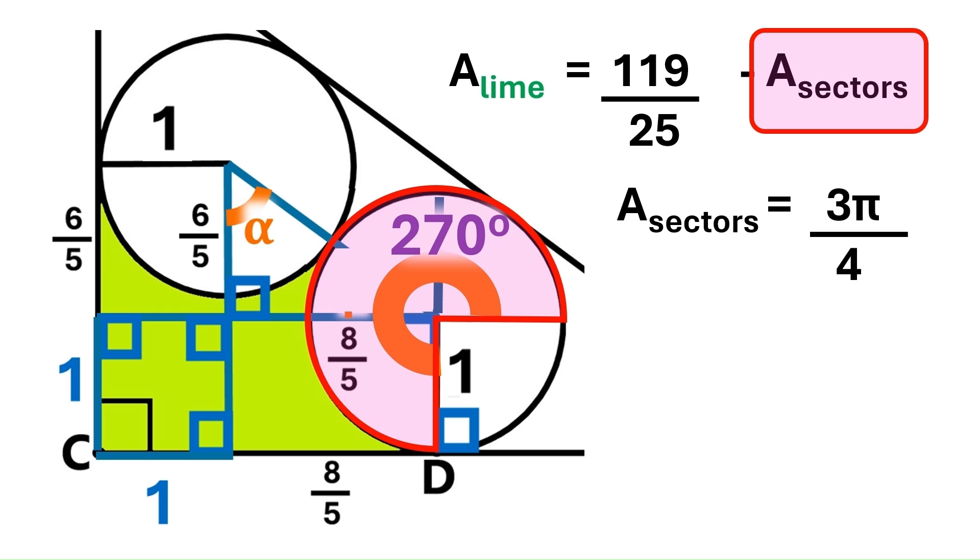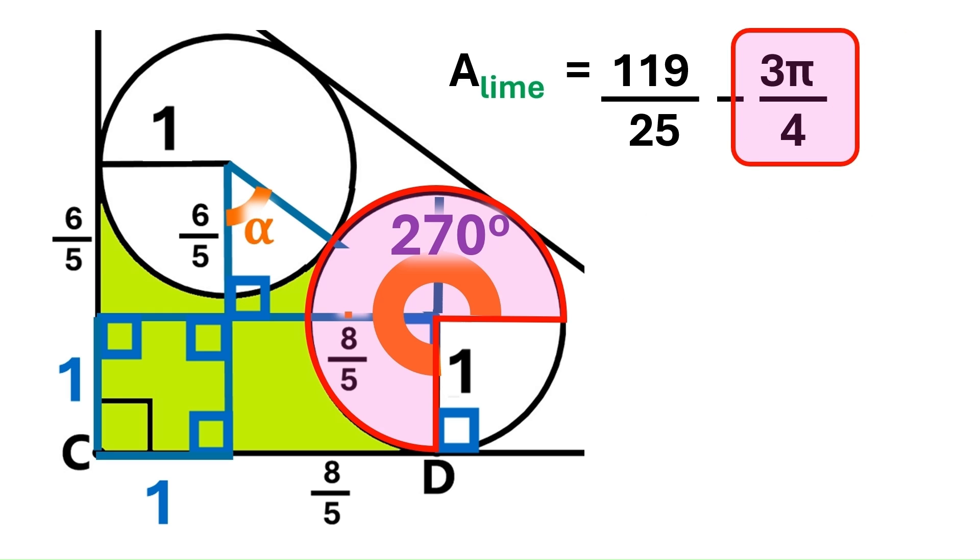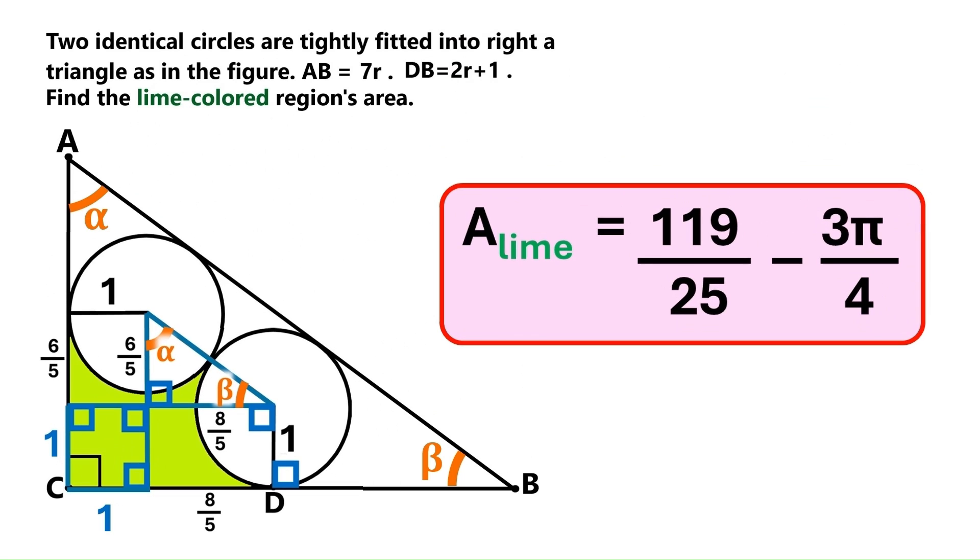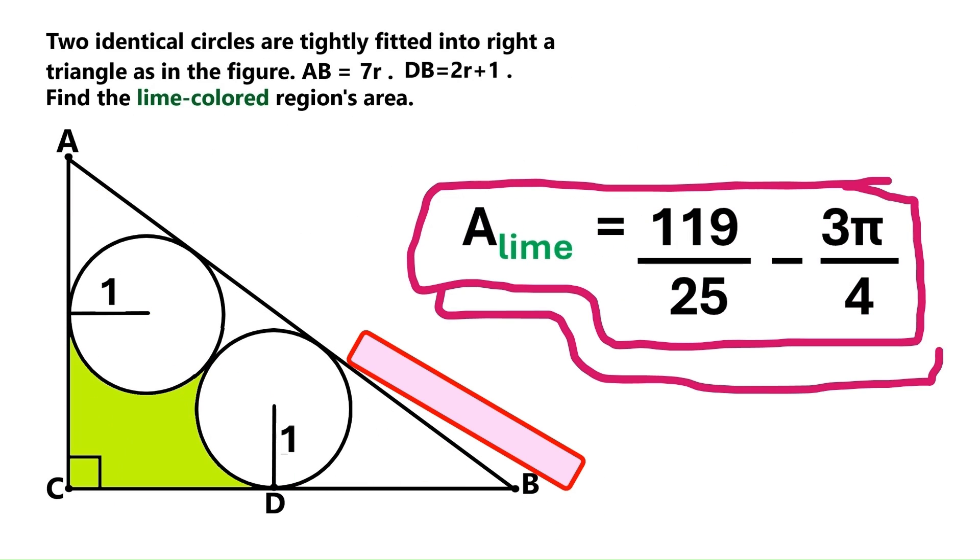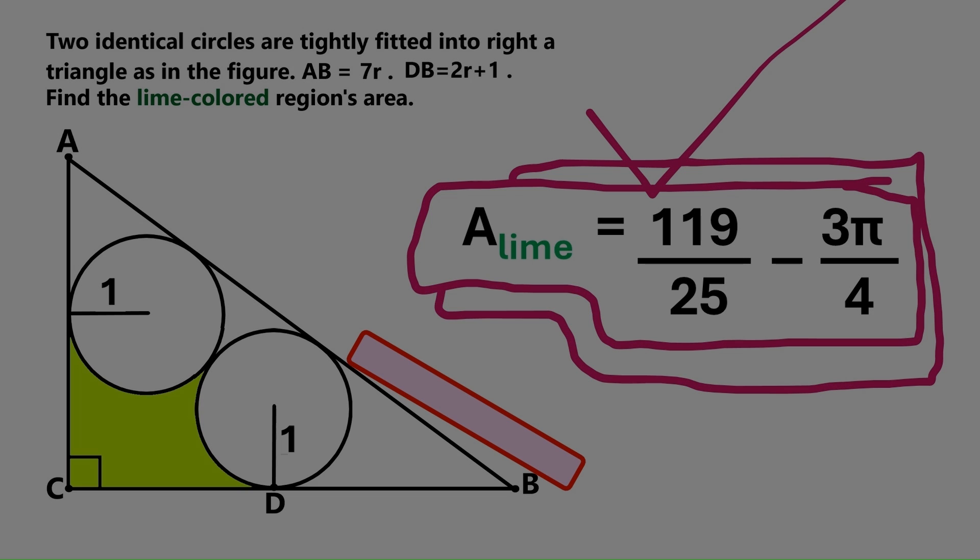We replace this area of sectors with that value, and there we are. We've found the area of the lime-colored region. It's 119 over 25 minus 3 pi over 4. So, if you enjoyed this video, please make sure you push the like button, and don't forget to subscribe to our channel for our future videos. Have a good day, and see you soon!